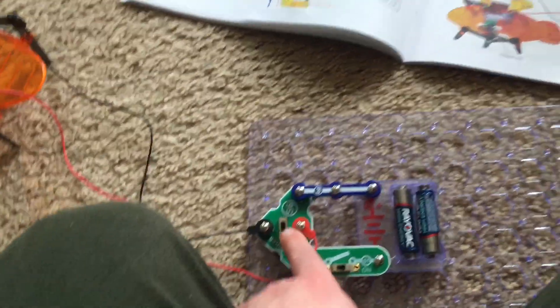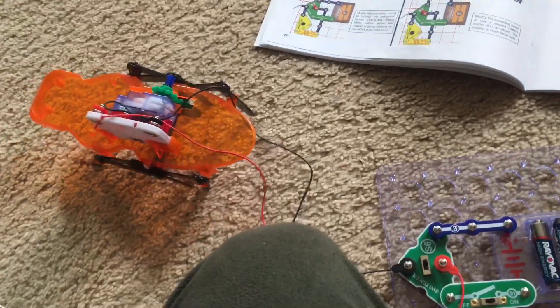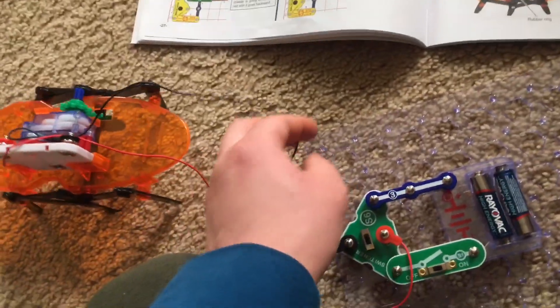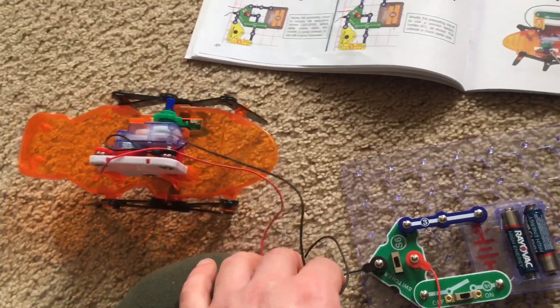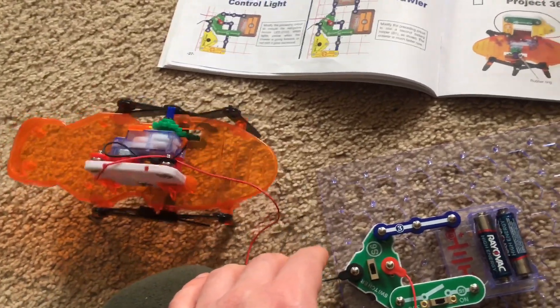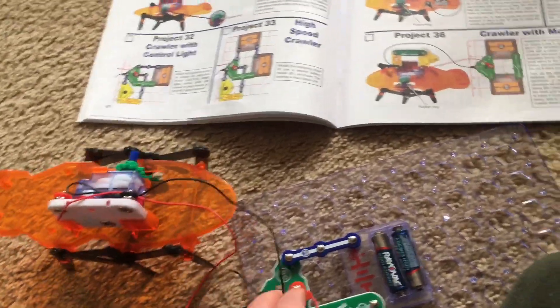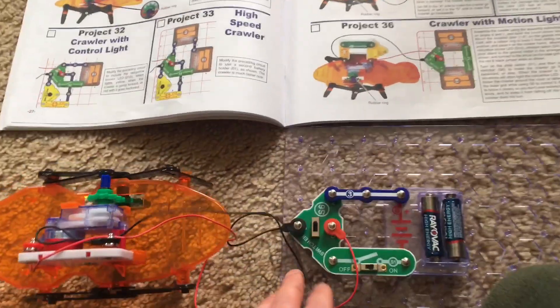Then I'm going to move the switcher on the other setting and now the crawler moves backwards towards me. It's important that when using it that you make sure that the wires do not get entangled in the motor or gears and that the crawler does not overextend or fall off the table if you're using it on one.